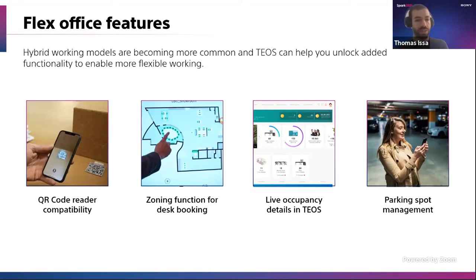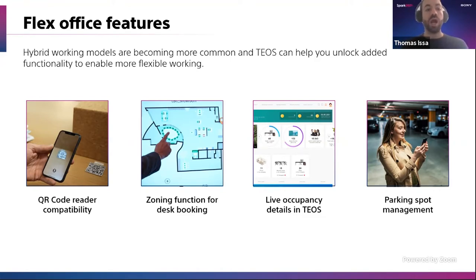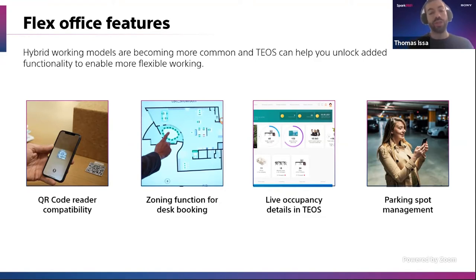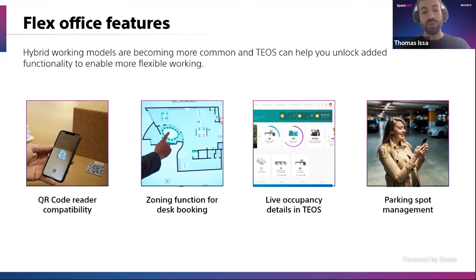One of the last items we really want to highlight today is everything related to the flex office. With the post-pandemic situation and the return to the office, the need for flexibility and hybrid working between home and the workplace has really risen — and this is what we would like to support with TEOS 3.0. There is QR code compatibility, meaning you can put a simple QR code on every single desk in your office to just scan and do an easy check-in or check-out. You will be able to book desks and see availability from your mobile, from Outlook, or from any application you use with TEOS.